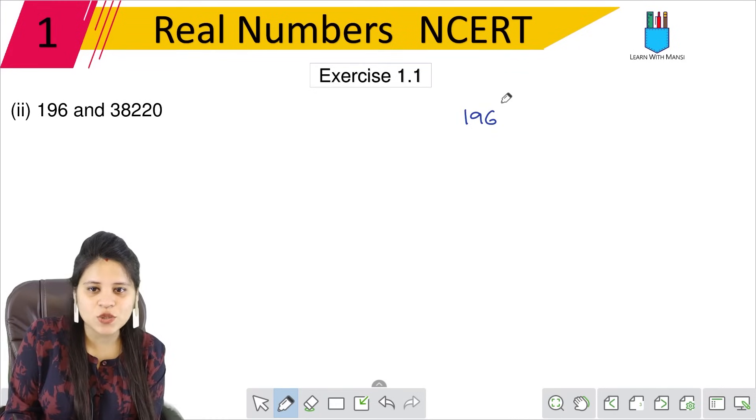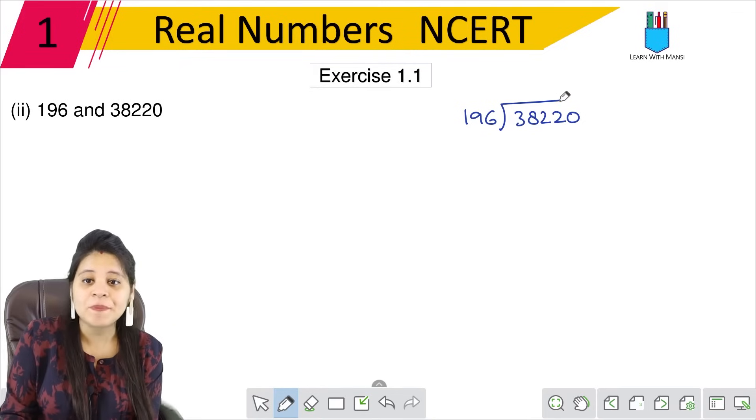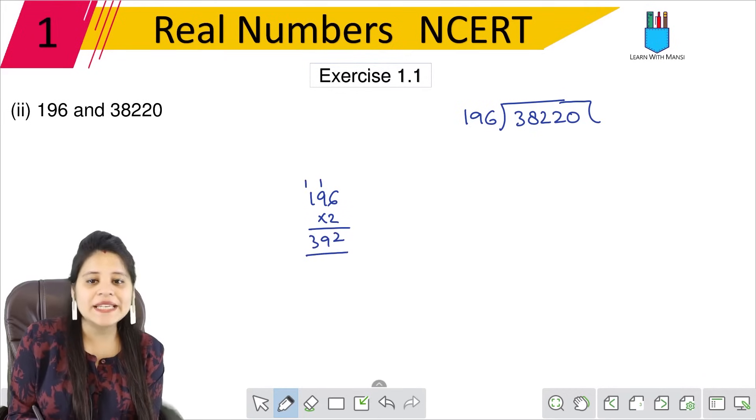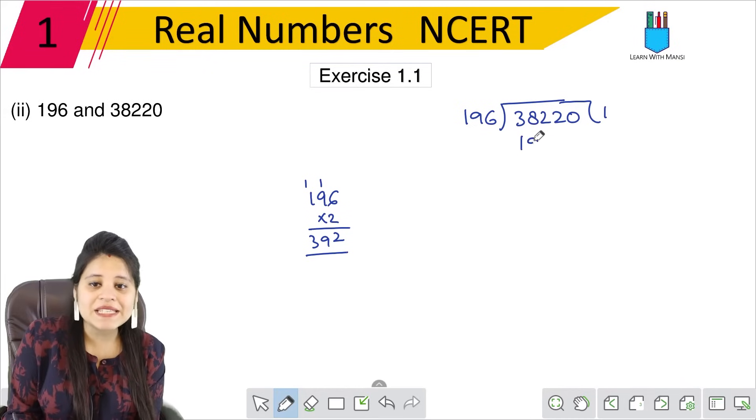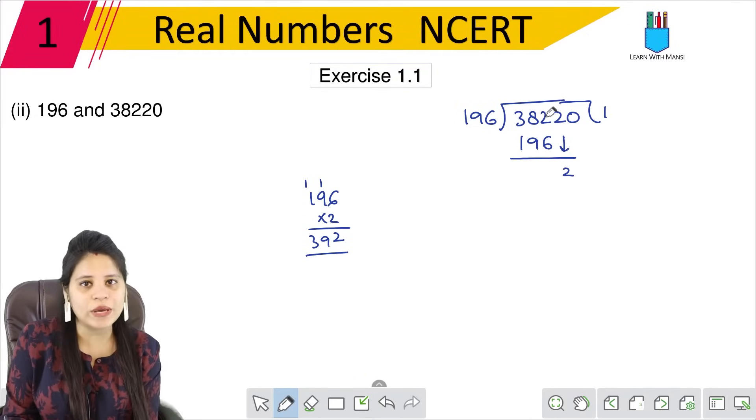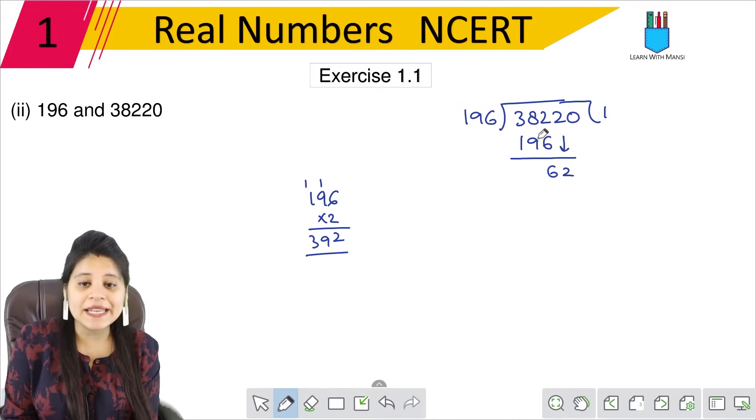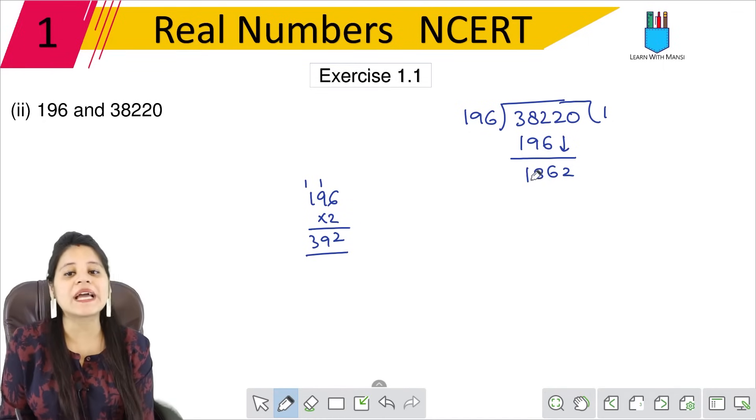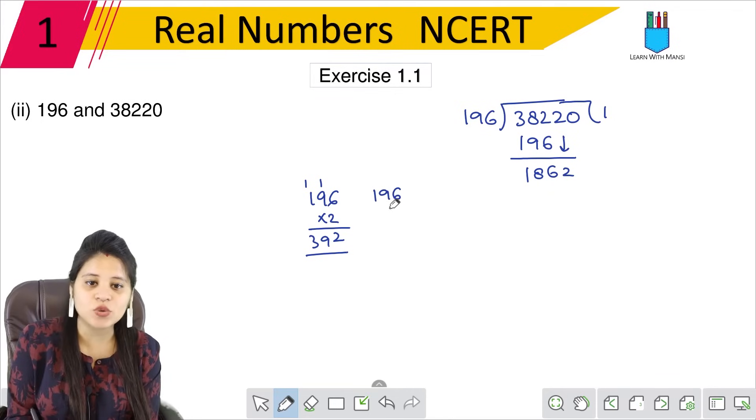The second part is 196 and 38220. First, we have to divide 38220 by 196. We'll start with three digits. If we try 196 into 2, that's too big, so we start with 1. 196 into 1 is 196, and we get remainder 186.